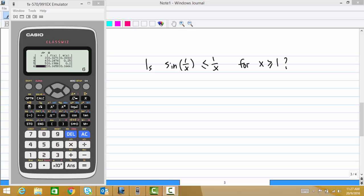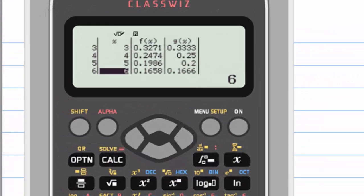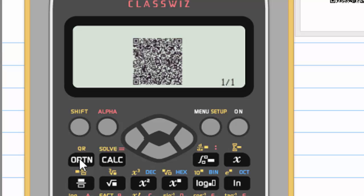You can also generate a QR code from this table and look at the graph. To do this, you just go and press shift, option for QR, then a QR code appears. And you can use a phone to scan the QR code.